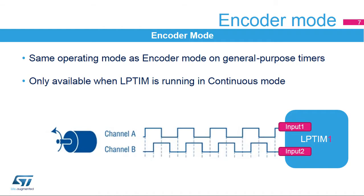The low-power timer features an encoder mode function that can interface with incremental quadrature encoder sensors using the peripheral's INPUT1 and INPUT2 inputs. The encoder function is similar to the one embedded by the general-purpose timers. In order to use the encoder mode function, the low-power timer must be running in continuous mode. Importantly, only the Low-Power Timer 1 peripheral embeds the encoder mode function — the Low-Power Timer 2 peripheral does not.